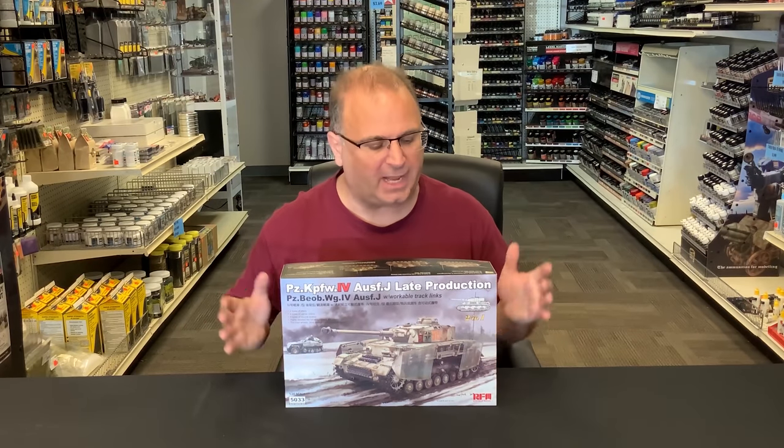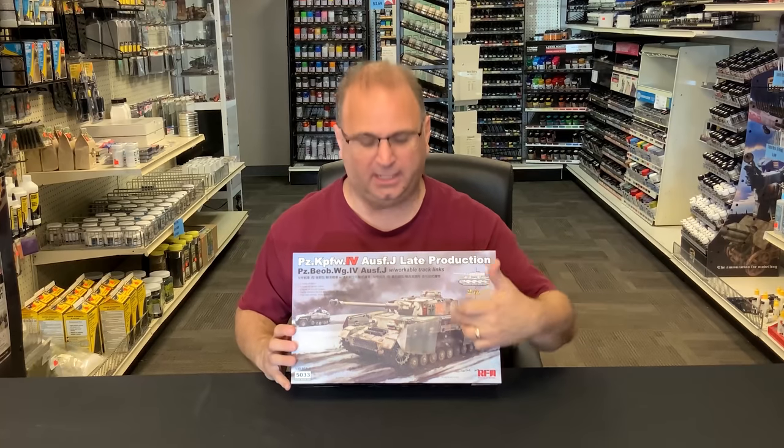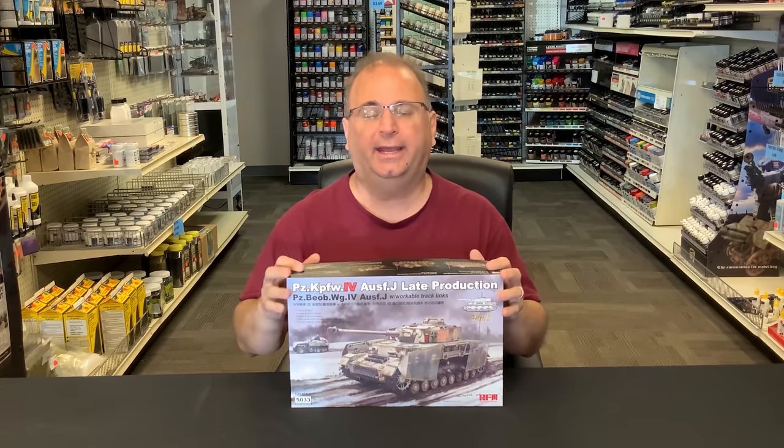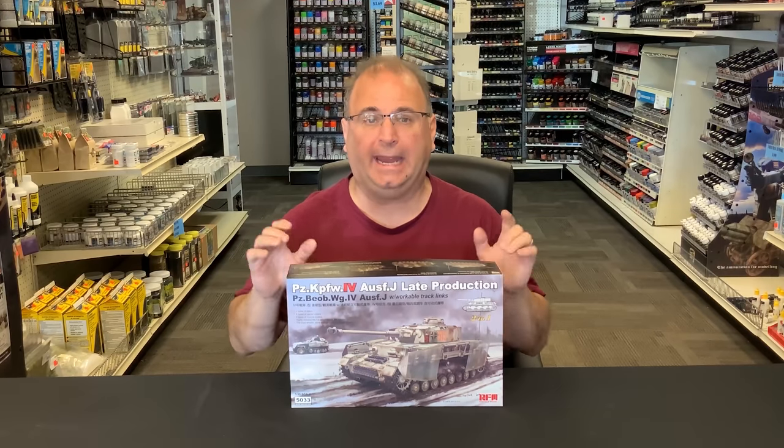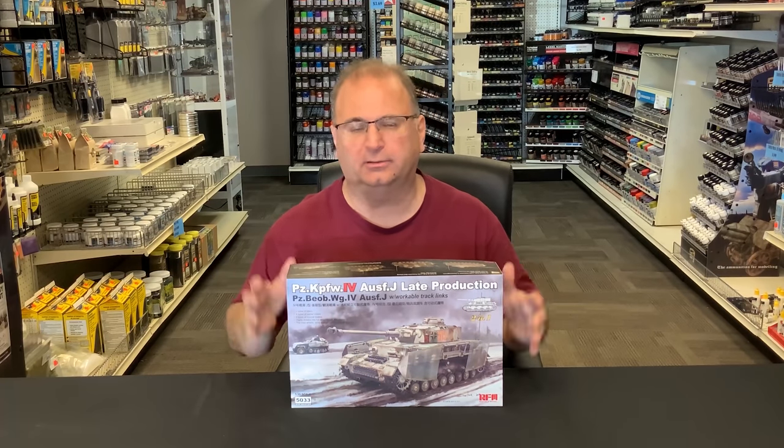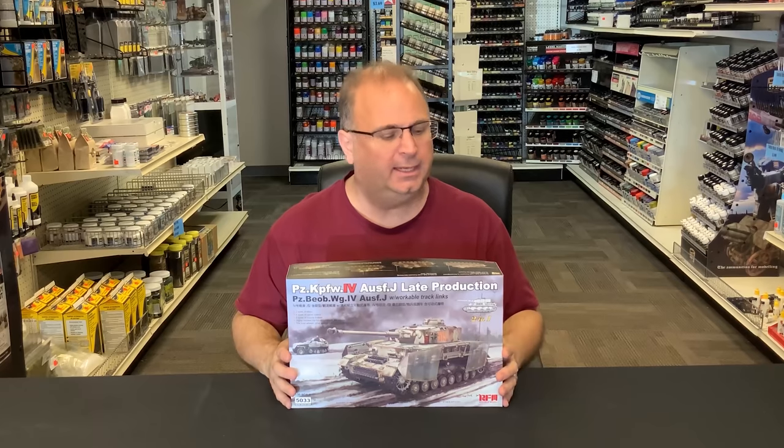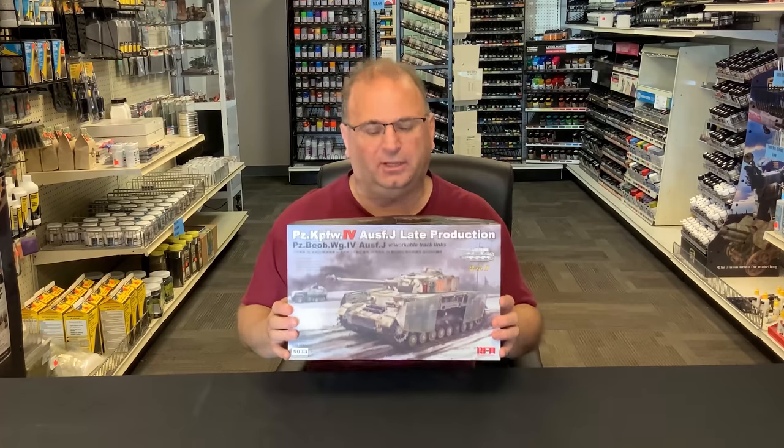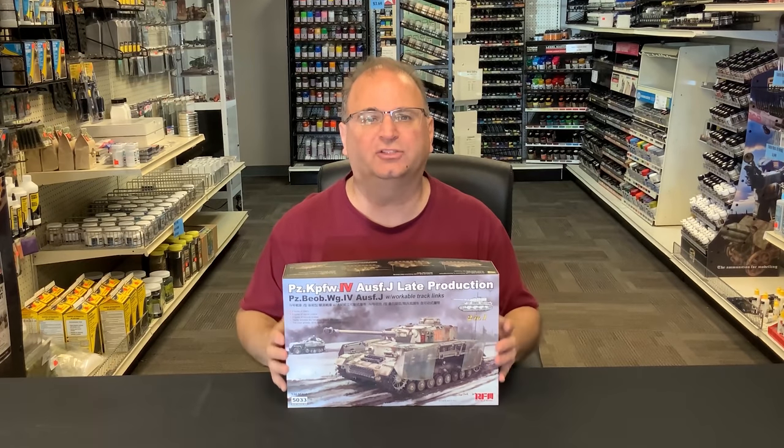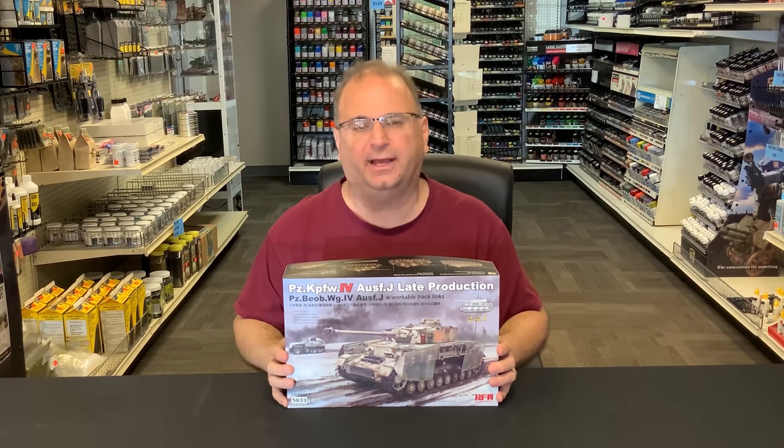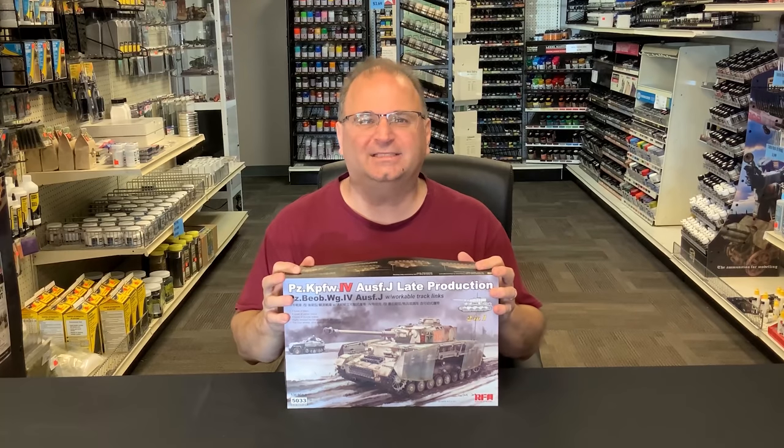So today we're going to be looking at the new Ryfield Models Panzer IV J, and this is a late J. It has all of the metal mesh screens on the side as well as on the top there. It is a beautiful looking kit. It has full workable suspension and tracks on it, so you can put it in different types of positions and moves. I just hope that these videos will offer a little bit of clarity, so when you see something like this you go, hey, that is really cool, I want to build that. So let's get started.